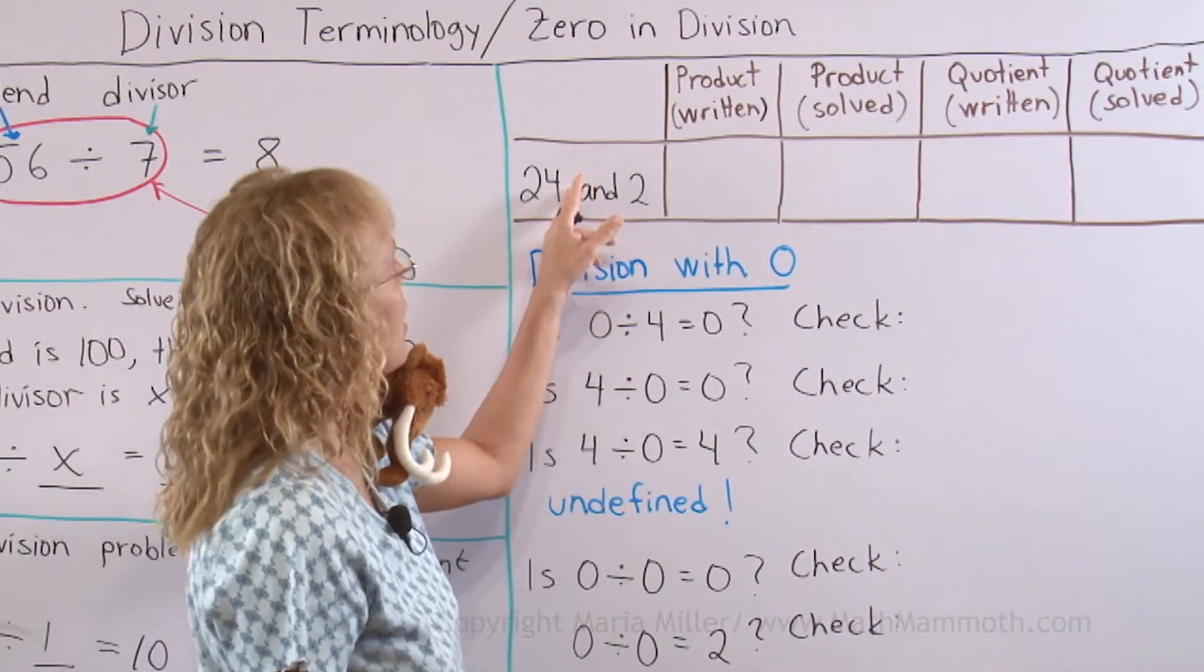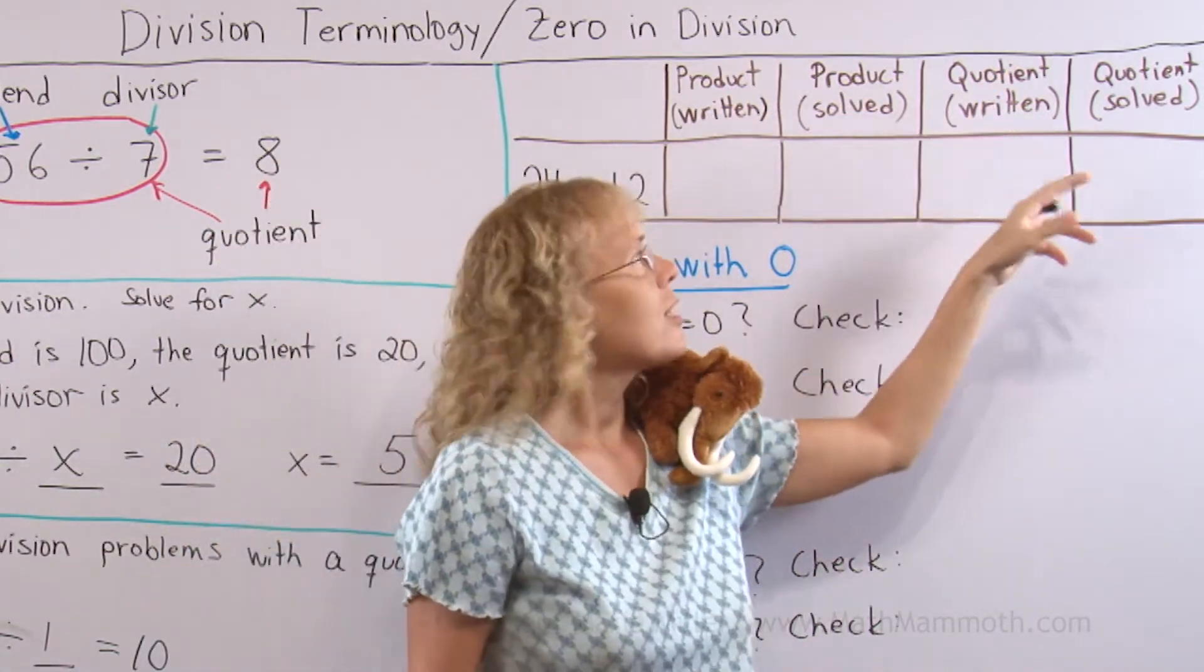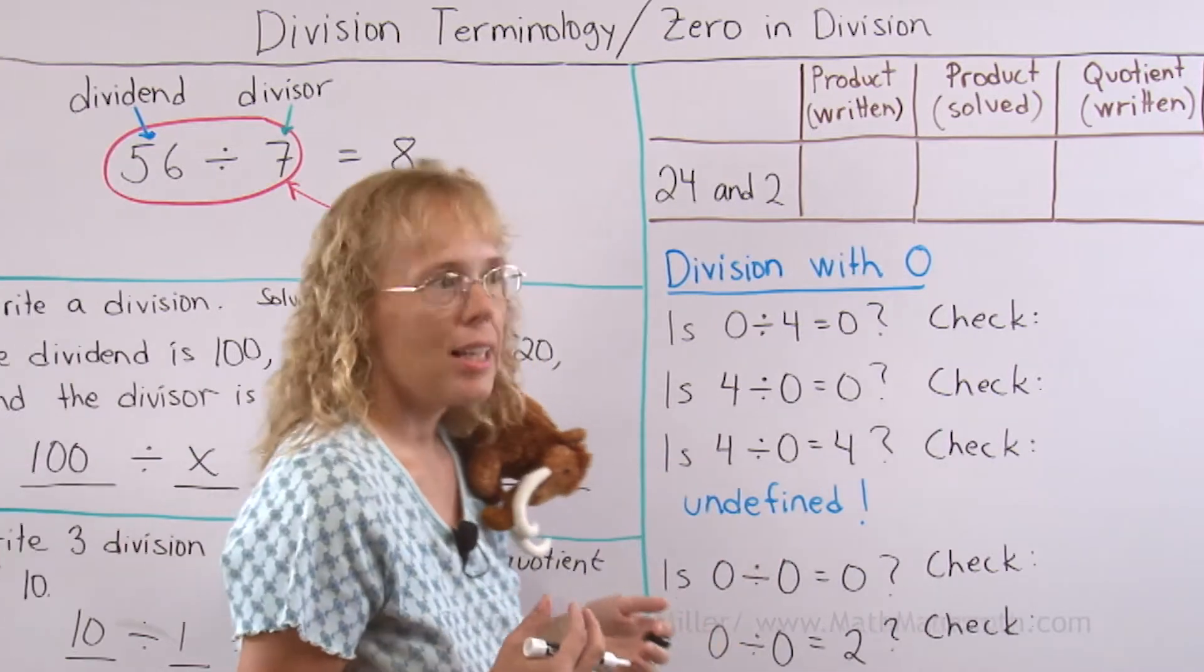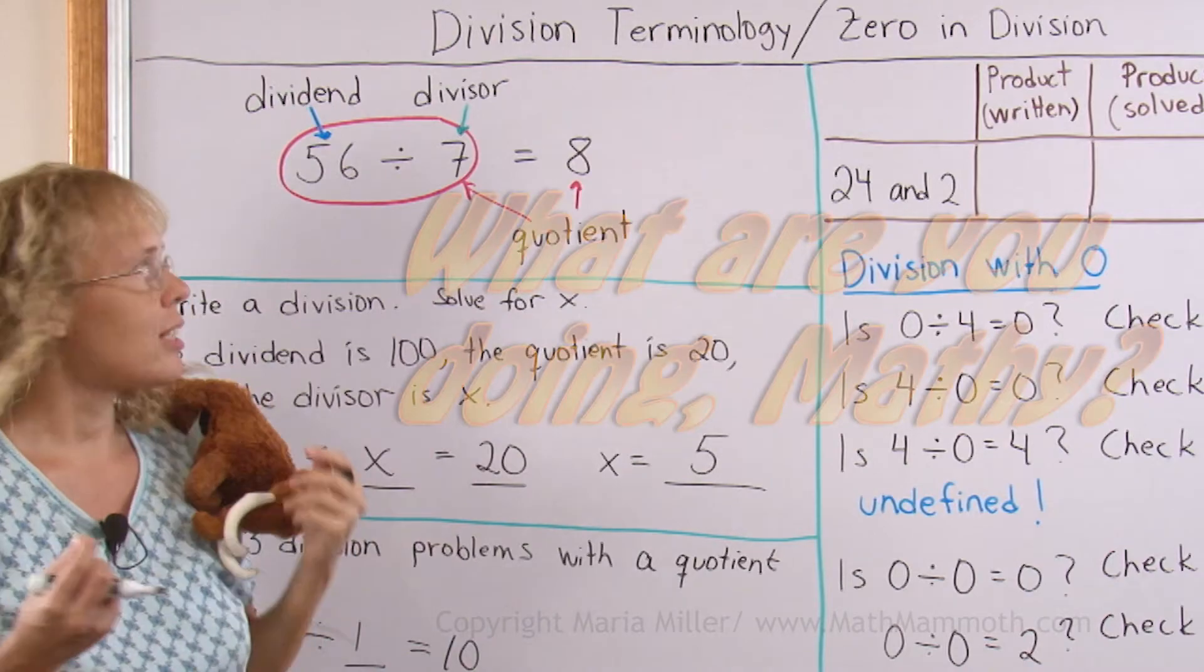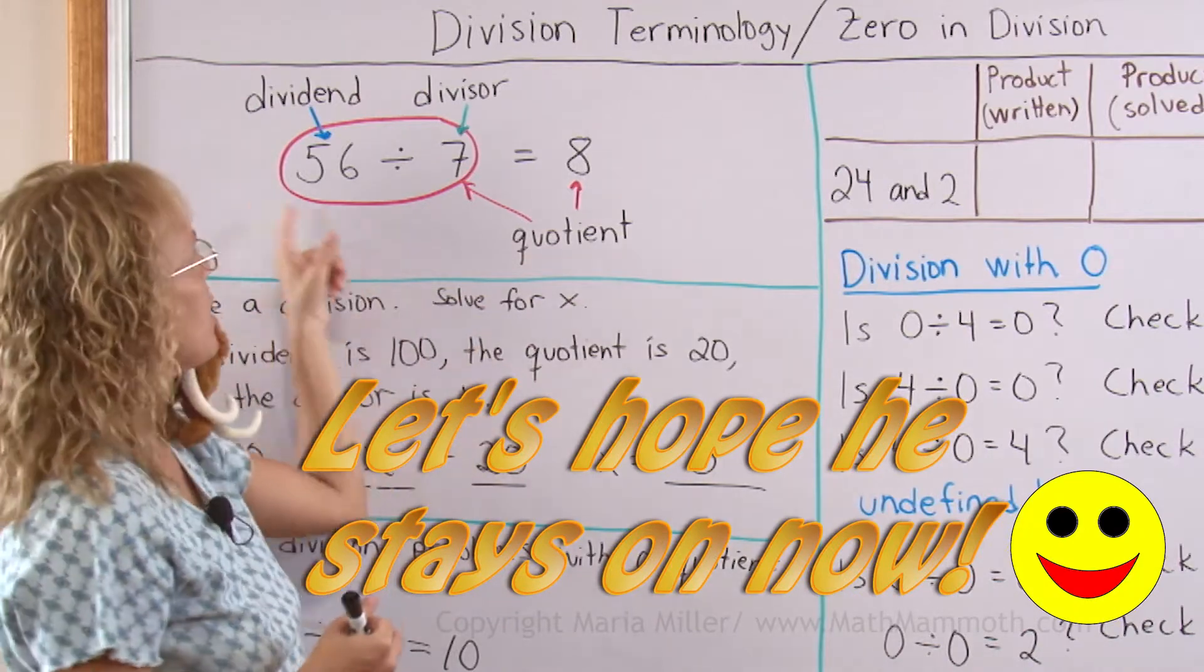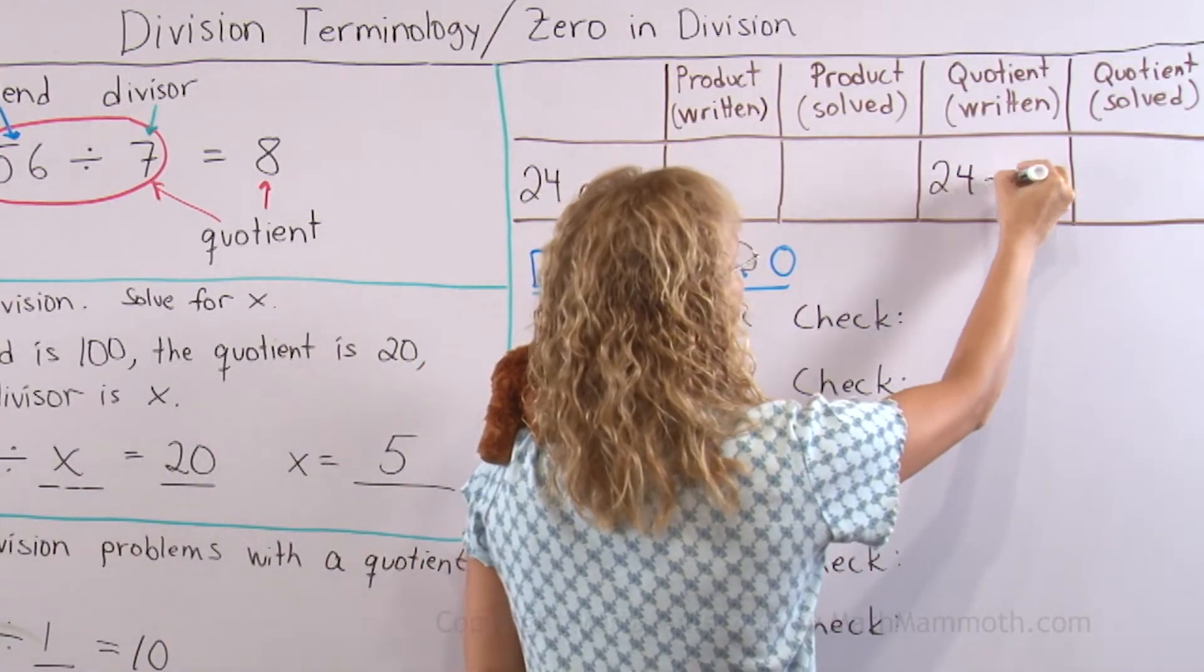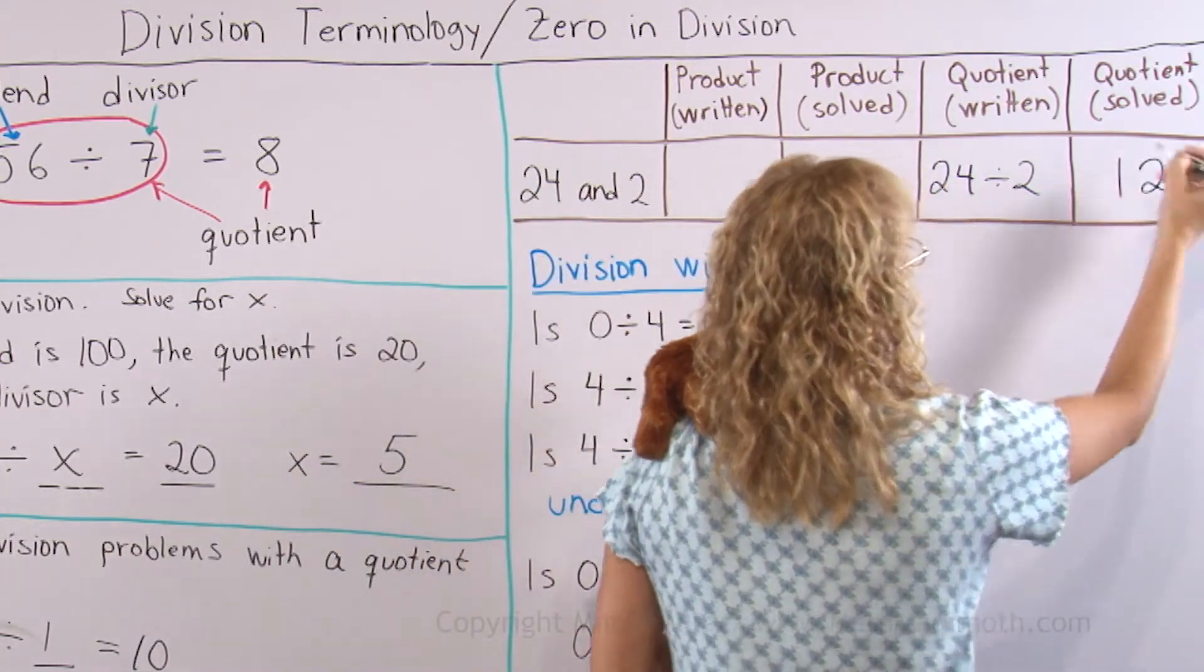Here I have two numbers and it is asking for product written, product solved, quotient written, quotient solved. I already told you what these two mean basically. Quotient solved means that it is the actual answer to the division problem here. And quotient written is this part here. 24 divided by 2 is the quotient written out. And then solved, it is just the answer 12.